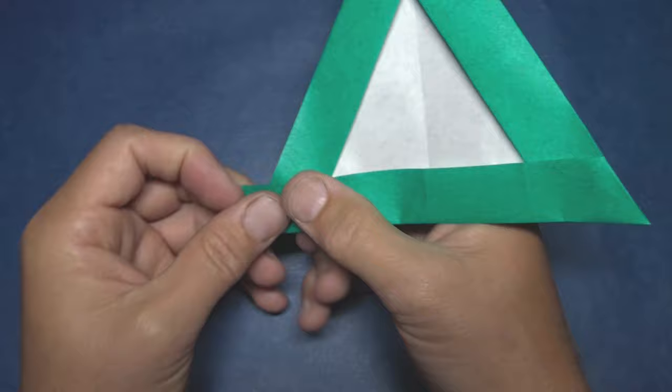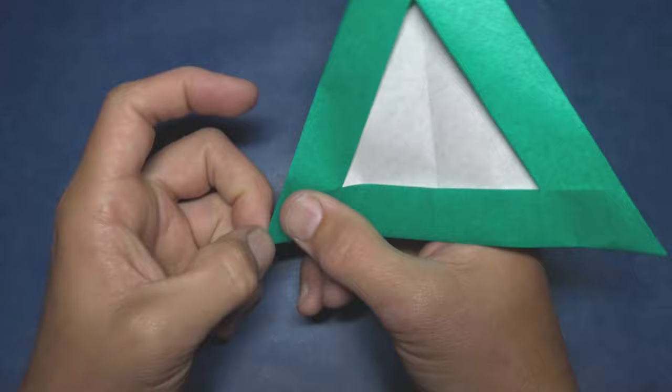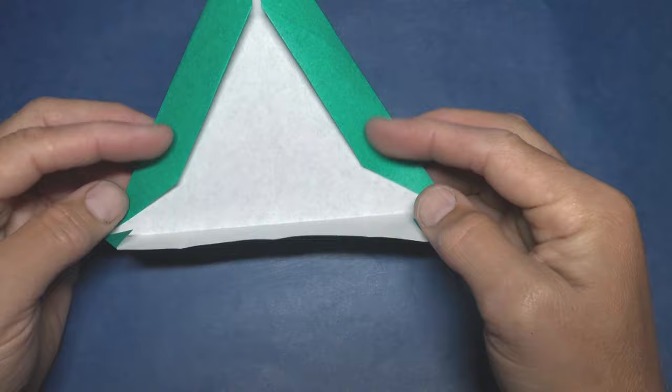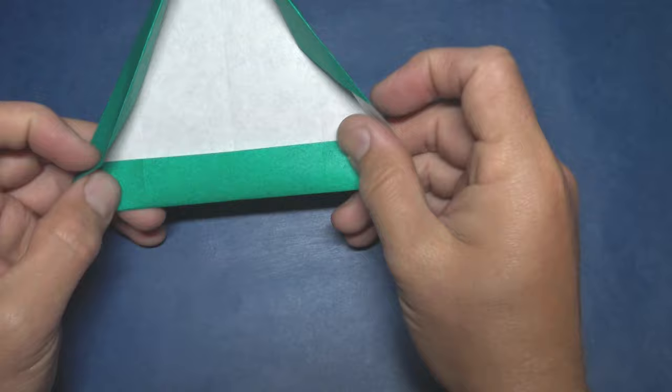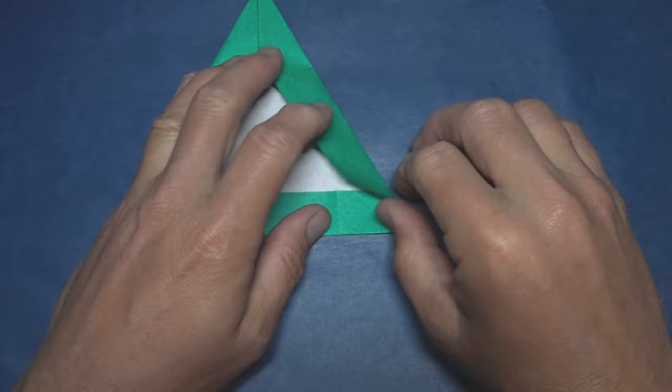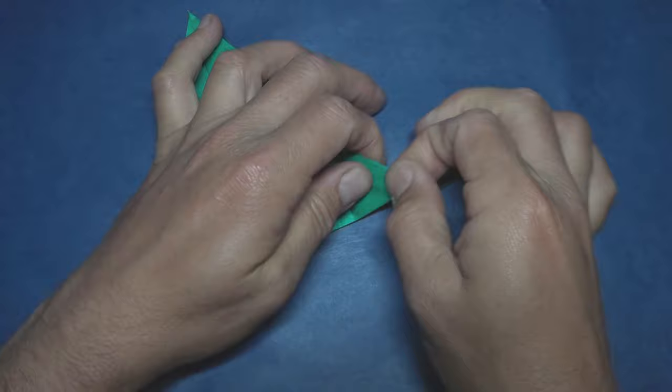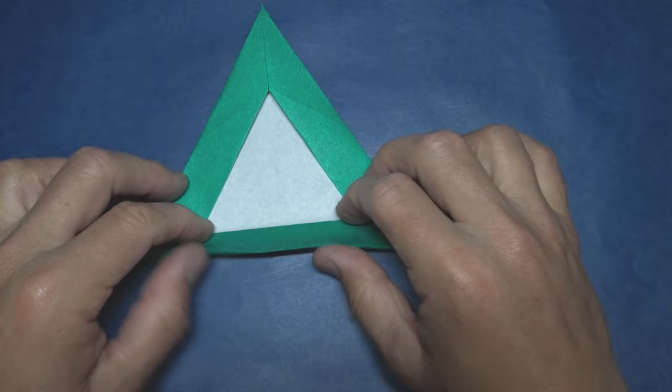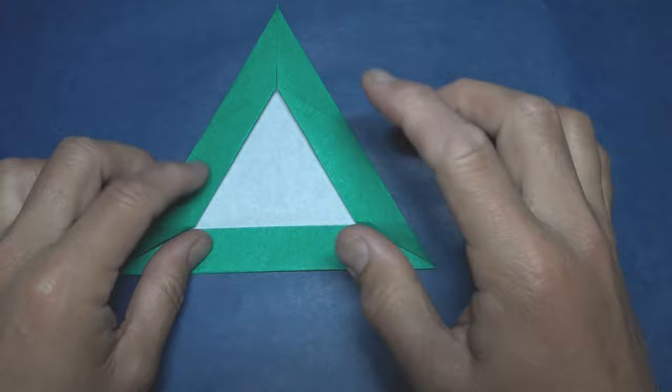And repeat. Unfold and unfold, refold the corners. Now take this flap and insert it underneath these two flaps. Okay, fold this flap up. We're just folding from here to here. And unfold and repeat on the other two sides.